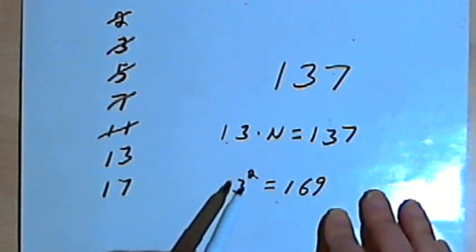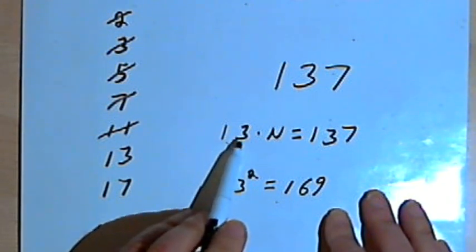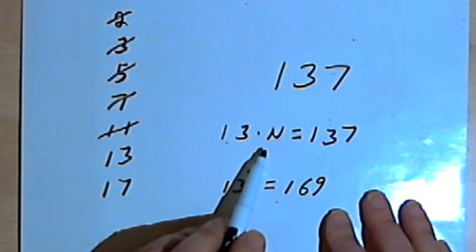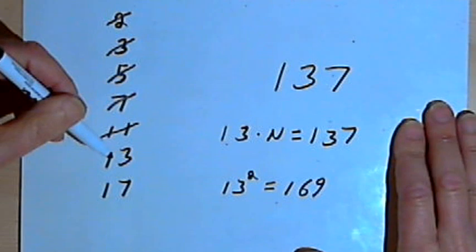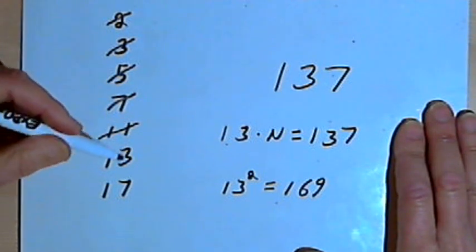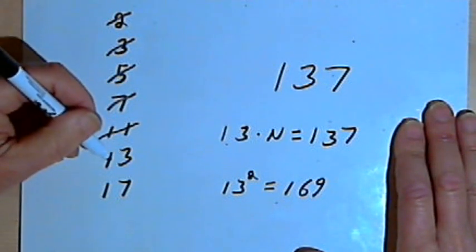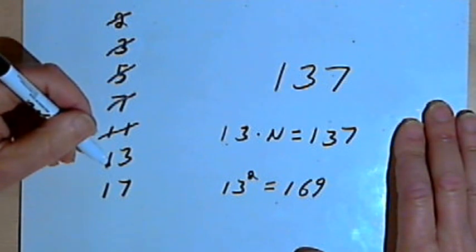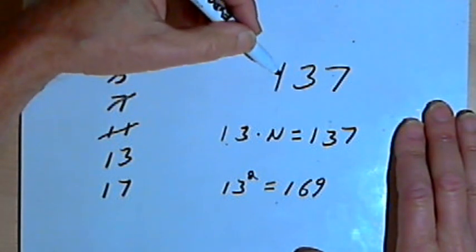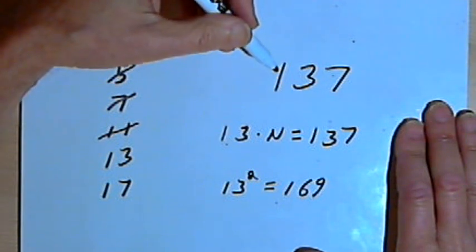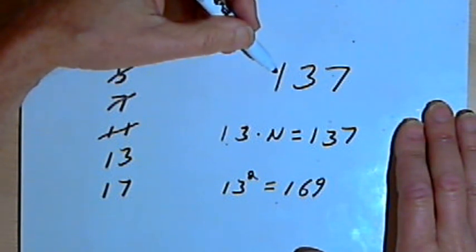Which also means any number bigger than 13, like 13 times 17, would not work either. So the general rule I've got here says that once I get to a prime number that has a square that's bigger than the number I'm checking, bigger than the 137, then I've already gone too far. And I shouldn't bother using that number or any number bigger than it.